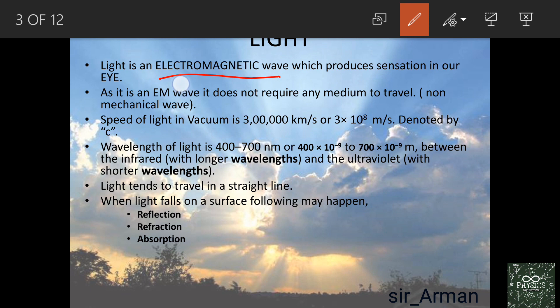As light is an electromagnetic wave, it does not require any material medium to travel. Sound is a mechanical wave because without air, sound cannot propagate — we cannot talk with each other without air. But light doesn't need any medium to propagate. From the Sun, the light reaches Earth through vacuum.